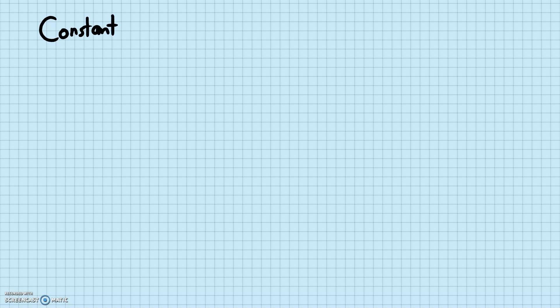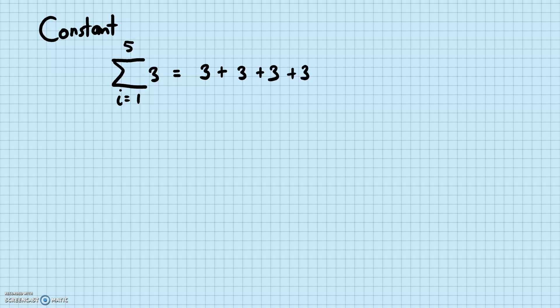Now let's look at a special case — the constant case. If we have the summation from i equals one to five of just the constant three, there's no i variable changing. So when i equals one it's three, i equals two it's three, and so on — we're just adding three five times, which equals 15.